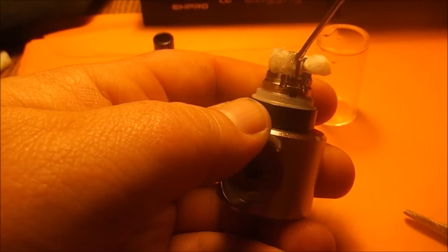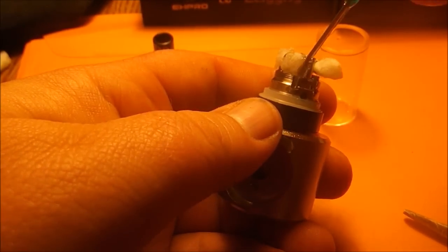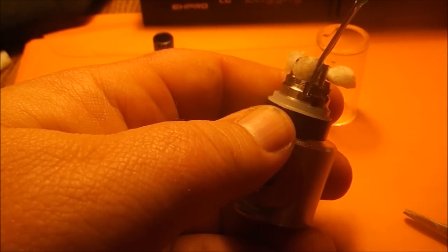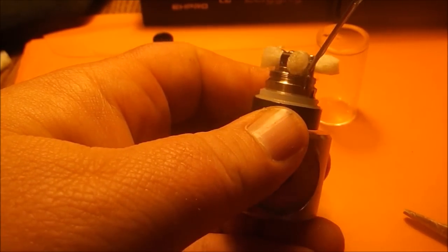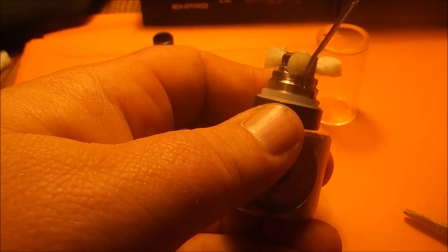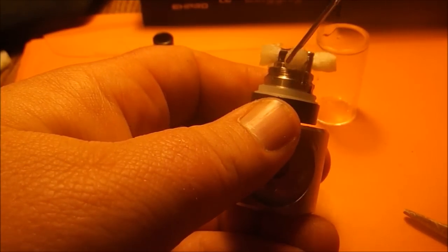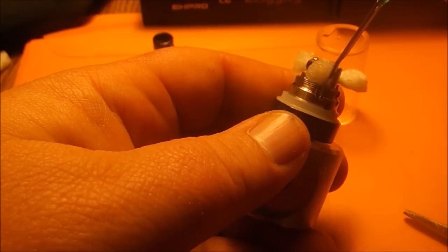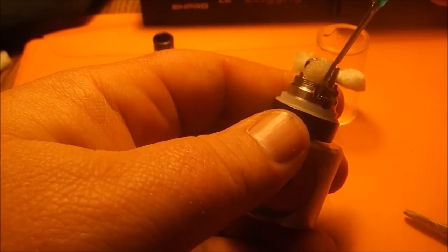And what I like to do is right against the negative post, I like to push a needle or something up against that. I like to keep a little area there open, lets the juice get up in there and it keeps it from going across the build deck into the air channels. Once you get in those air holes it'll start leaking even worse.